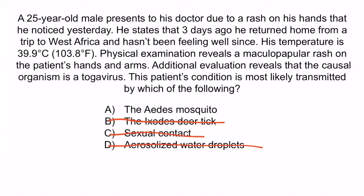So again, the correct answer is A, the Aedes mosquito. And with that, we've covered everything you need to know regarding chikungunya virus and Eastern, Western, and Venezuelan equine encephalitis viruses.